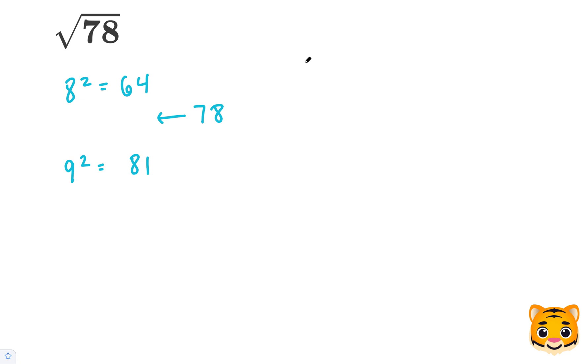Now let's write the following inequality. The square root of 64 is less than the square root of 78, which is less than the square root of 81. We can write this inequality because 64 is less than 78, which is less than 81. Now let's simplify this. The square root of 64 can be simplified to 8 because 8 squared is 64. The square root of 81 can be simplified to 9 because 9 squared is 81. So now our inequality is 8 is less than the square root of 78, which is less than 9.